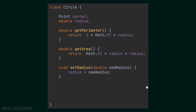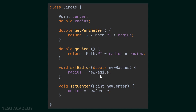We still have two more methods. The setRadius method returns nothing, so its type is void, and it takes a new radius, which is a double, as a parameter. Inside this method, I'm assigning the radius attribute to equal the value of the new radius received as an argument.